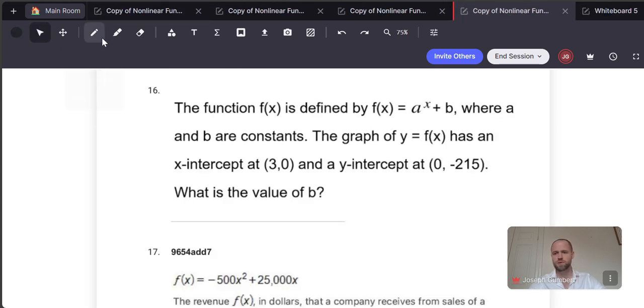So the first one that we want to talk about is avoiding the fool's gold. Most people are going to see this plus b, and they're going to see that it's a y-intercept of 0, negative 215, and they're going to think, oh, well that's an easy question. It's negative 215 as the correct answer, right?